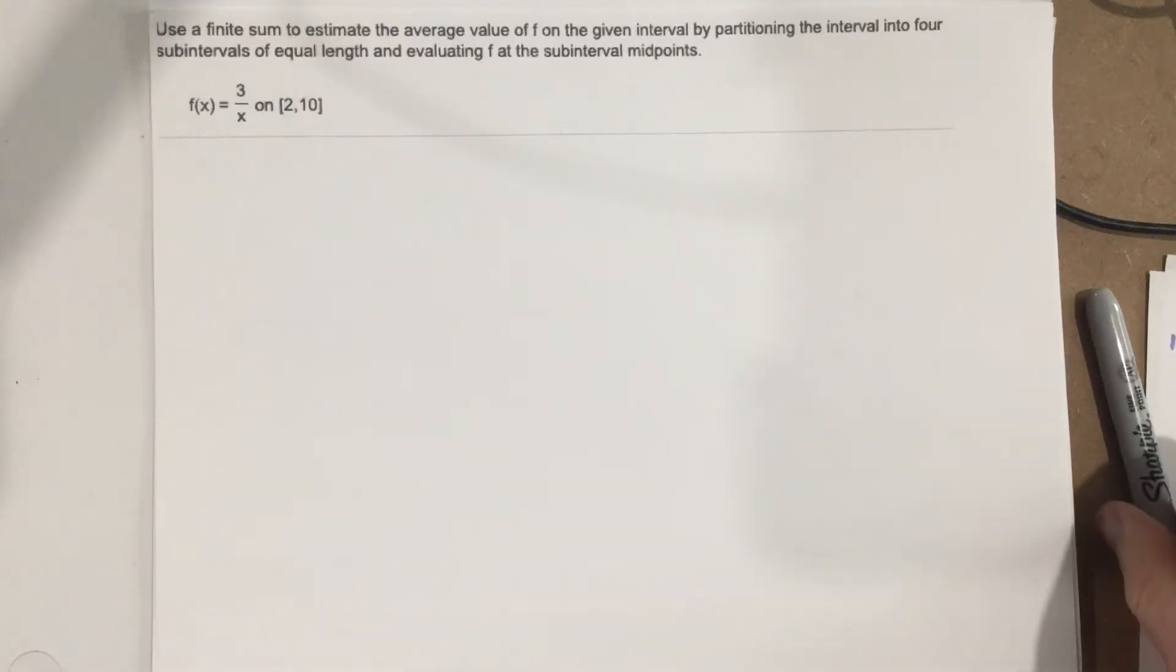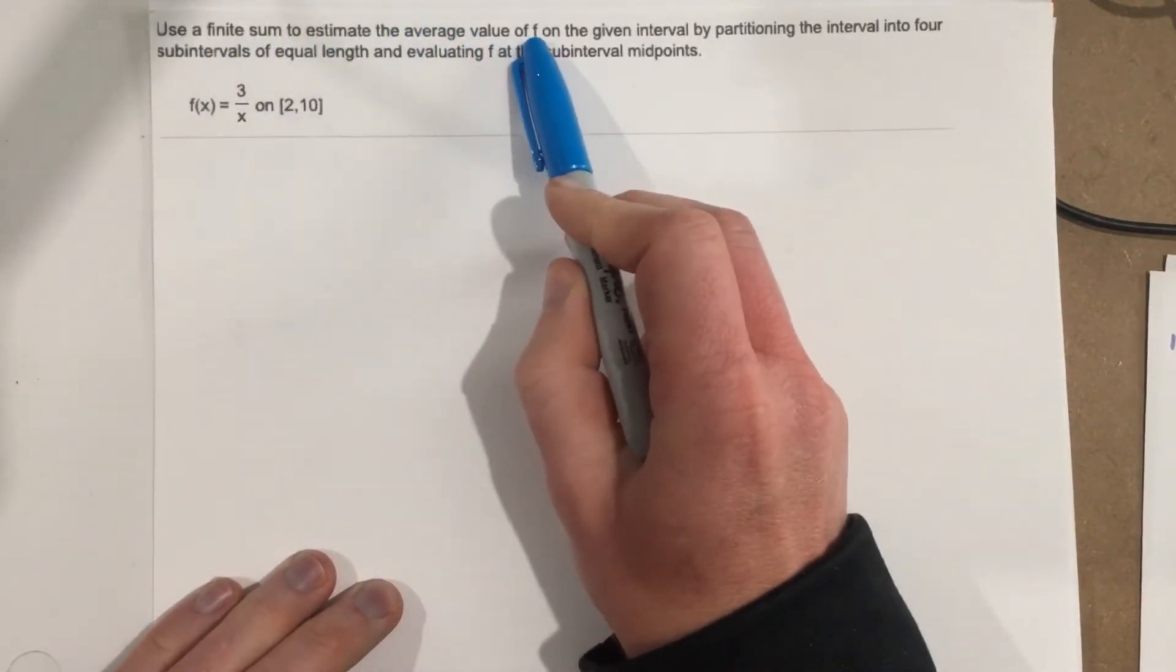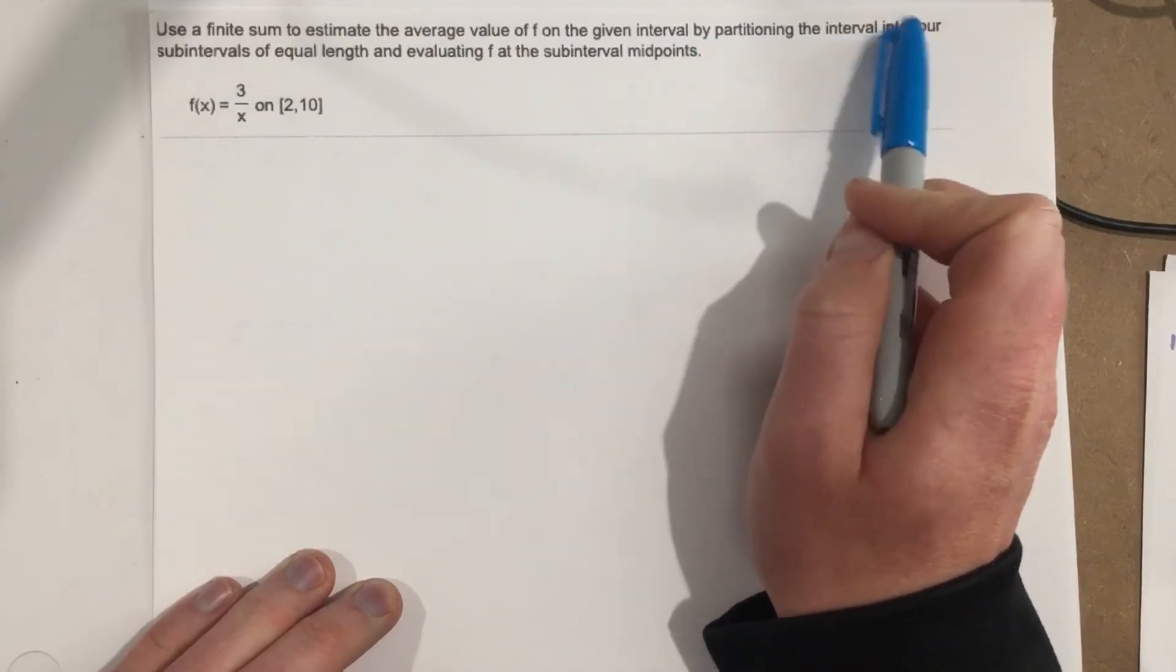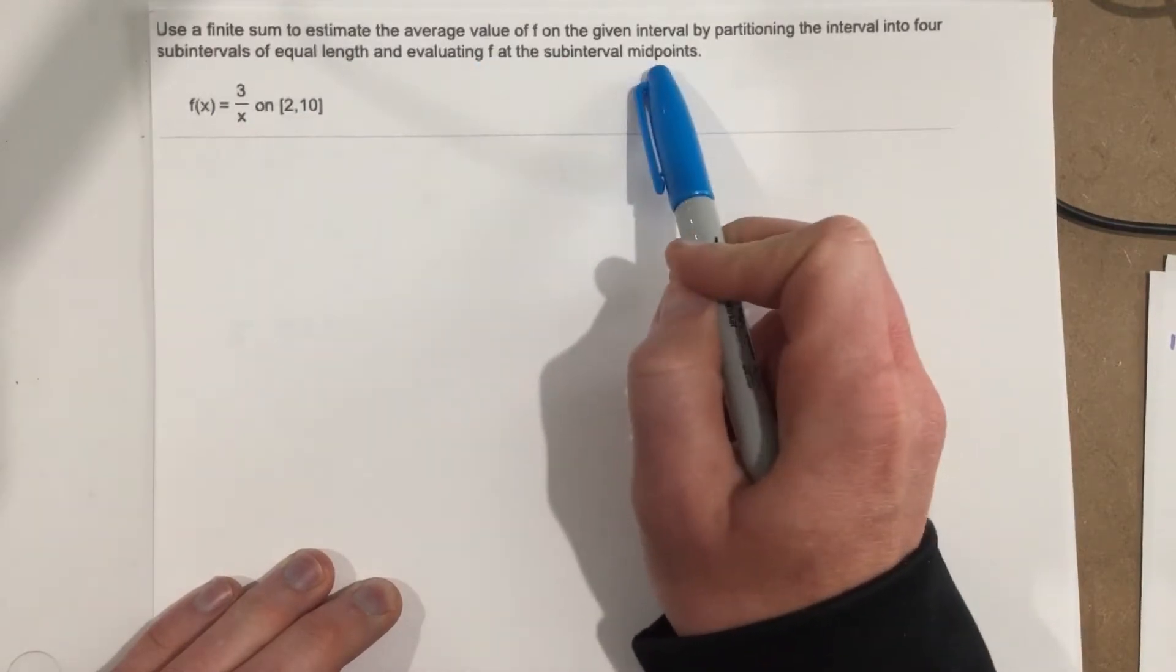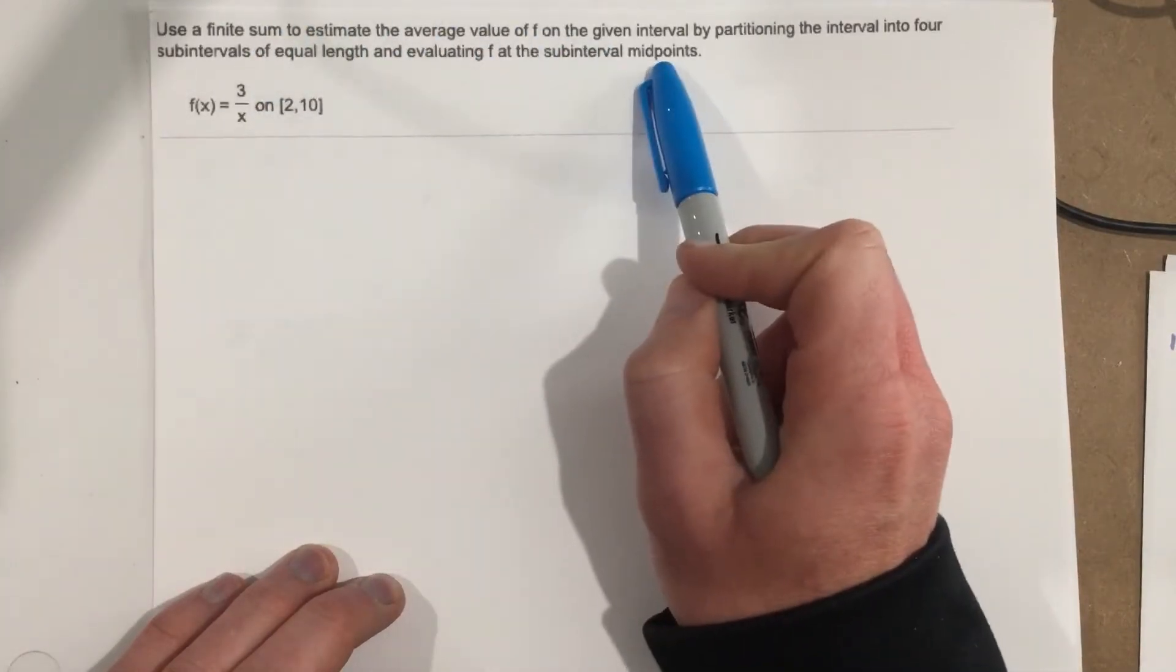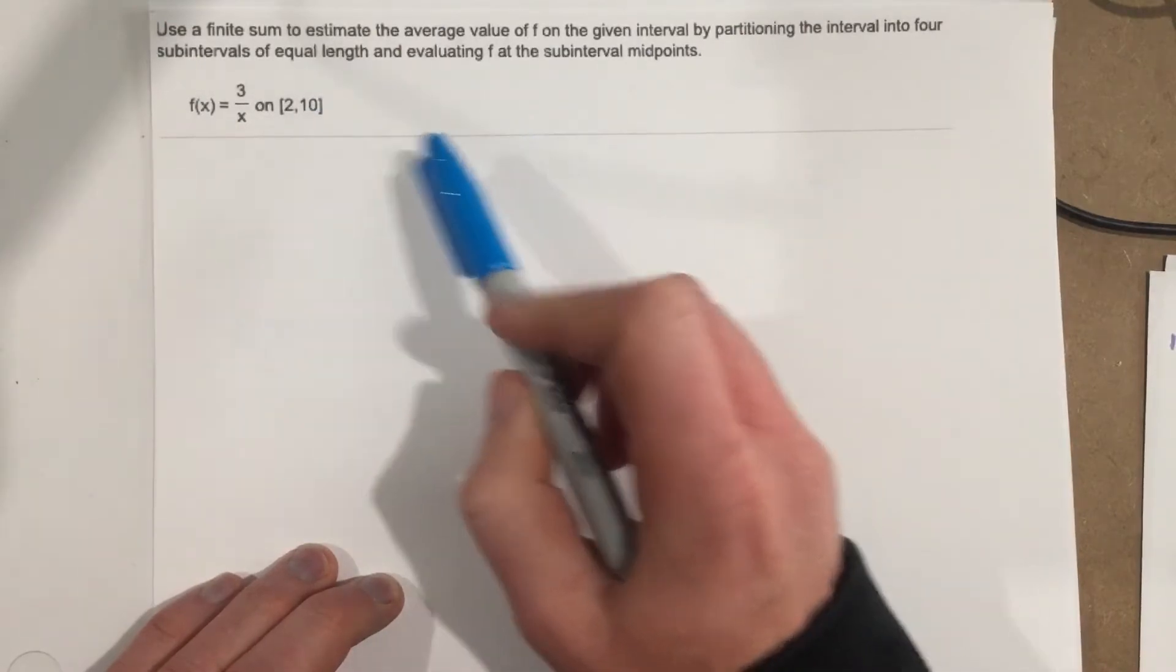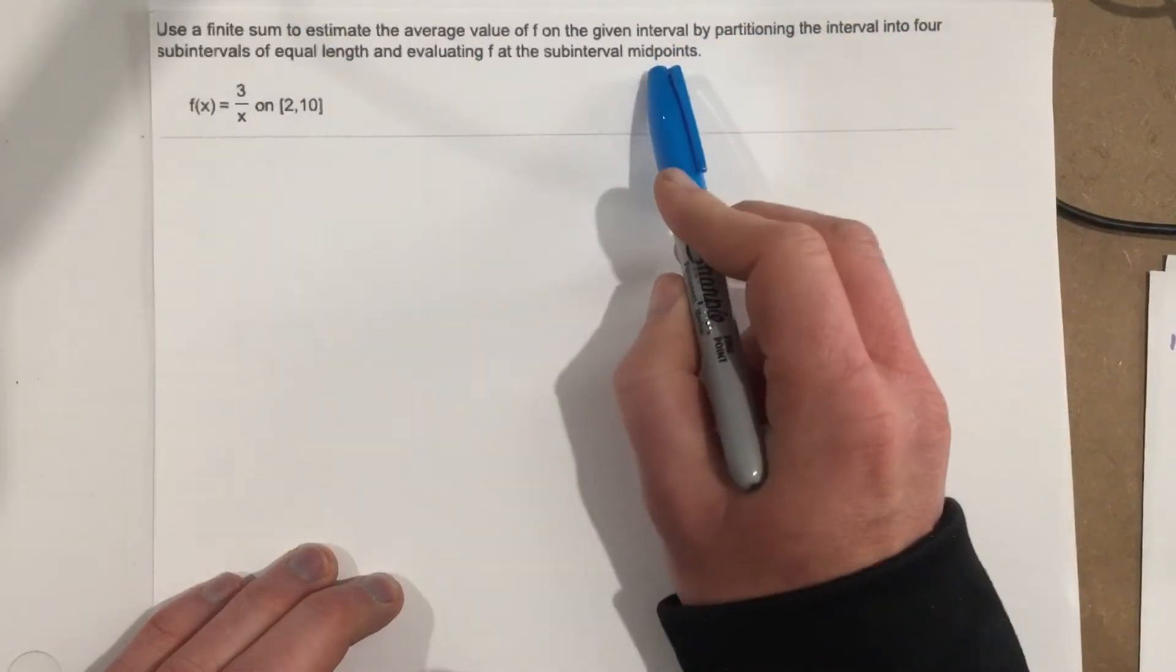This is problem number 5 from section 5.1. In this problem it says, use a finite sum to estimate the average value of f on the given interval by partitioning the interval into four subintervals of equal length and evaluating f at the subinterval midpoints. All this is asking you to do is use a finite sum, four rectangles using the midpoint rule.